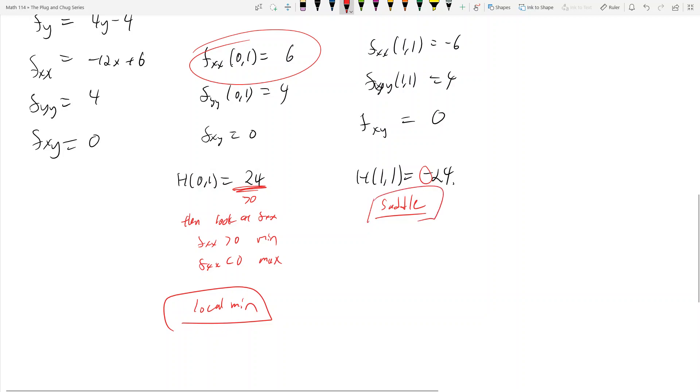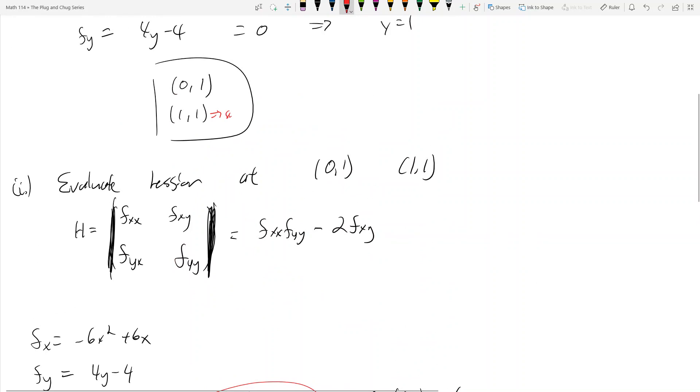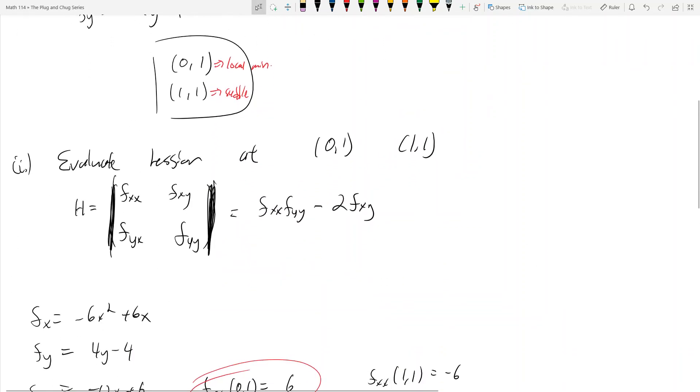So what do I get? At 1, 1, this is a saddle. At 0, 1, I have a local minimum. And that's it. So this is on the open region. We found the critical points, that's the first part. And the second part is the value of the Hessian.